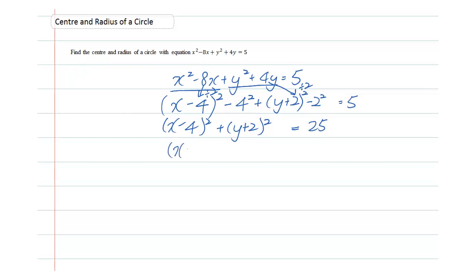And let me just rewrite this. So this is the equation that we have: (x - 4)² + (y + 2)² = 25.